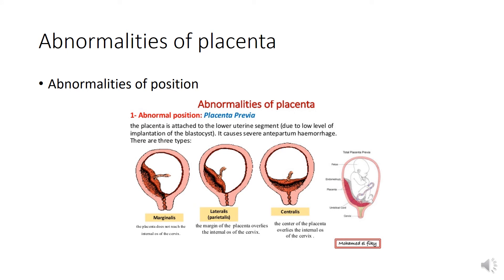Regarding abnormalities of placenta, abnormal implantation of the conceptus in the lower part of the uterus results in placenta previa, which partially or completely covers the internal os of the uterus. Placenta previa is clinically important because it usually leads to vaginal bleeding during the third trimester — antepartum hemorrhage — caused by expansion and stretching of the lower uterus, tearing the placenta away from the uterine wall. In cases where placenta previa completely obstructs the internal os, the fetus must be delivered by cesarean section.